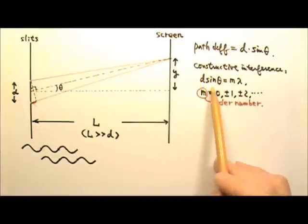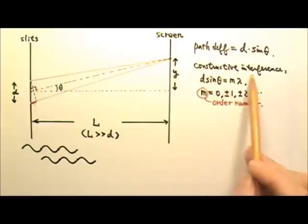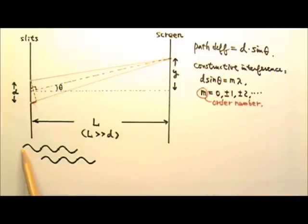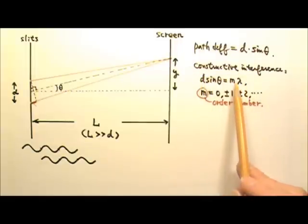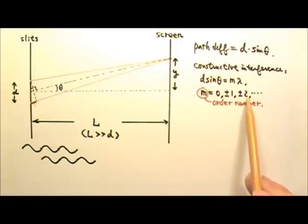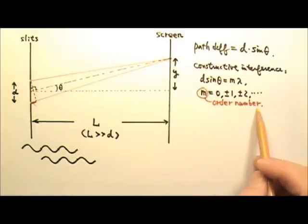When the path difference is a whole number times the wavelength, we get constructive interference. Because if we have two waves over here, and this wave is one whole wave behind the other wave, we will still have peak meeting peak, trough meeting trough, for constructive interference. And so the M can be 0, 1, 2, 3, whole number. And this M is what we call the order number.